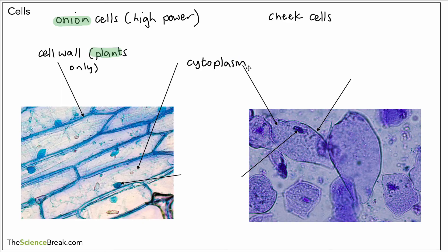Our next label is found in both onion cells and cheek cells - in other words both plant and animal cells - and that's the cytoplasm. All these labels have been done in the video previous to this, so you can go take a look if you're not sure.